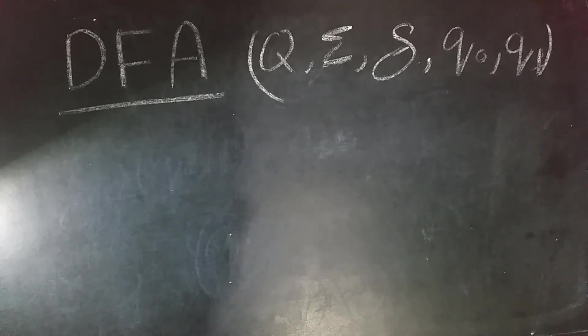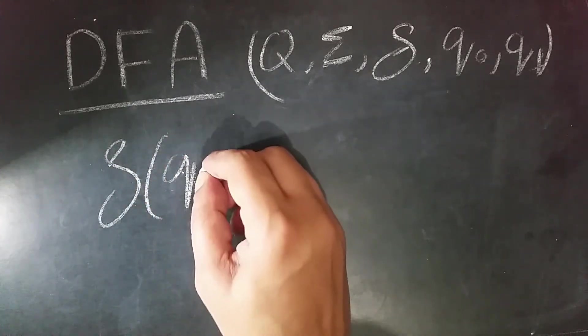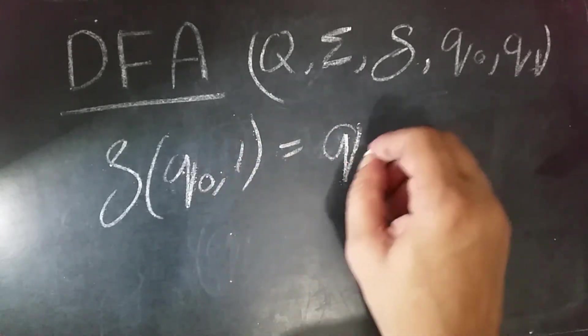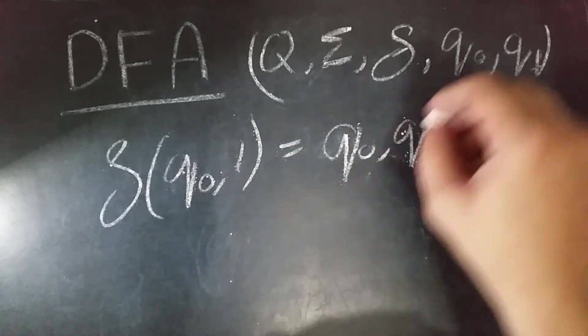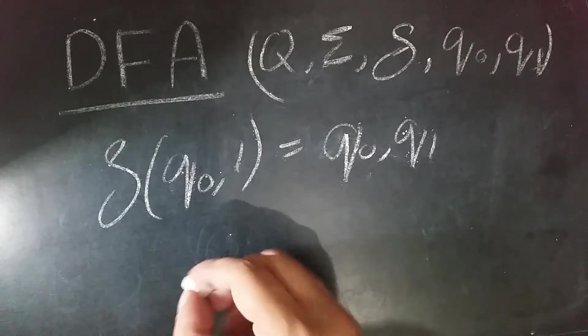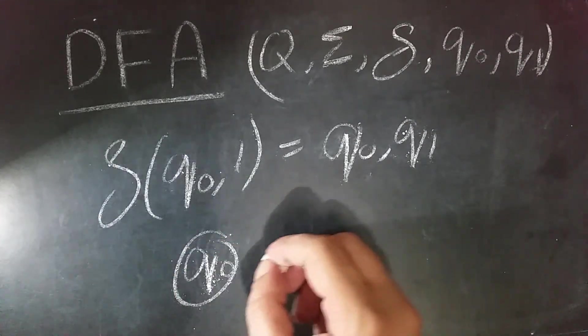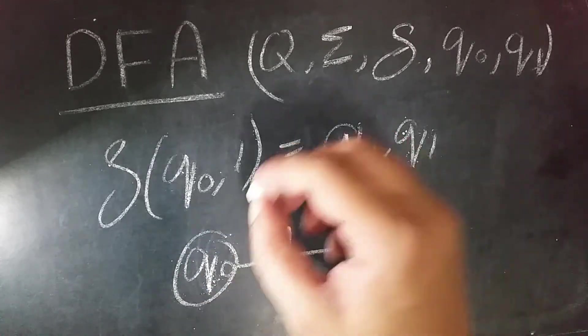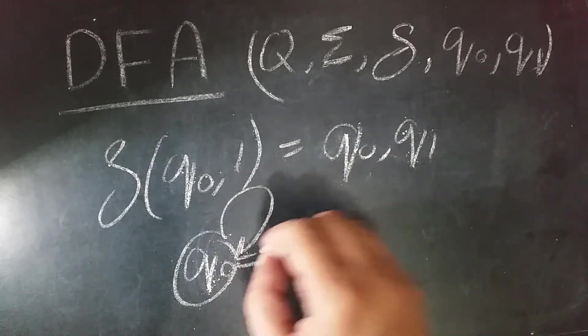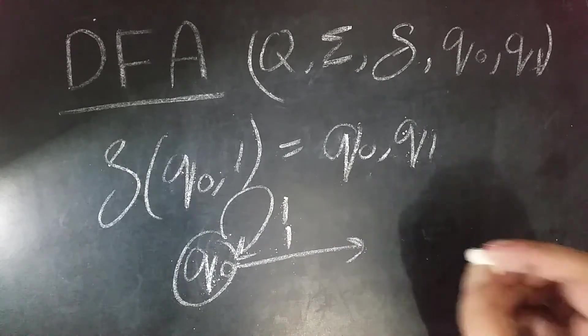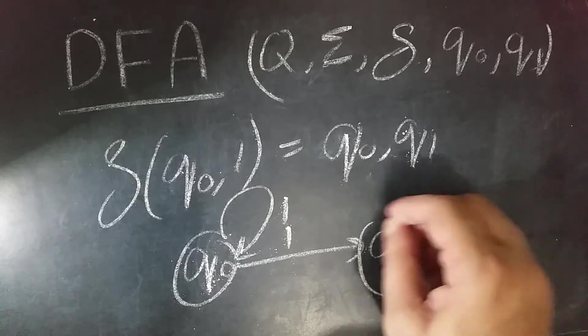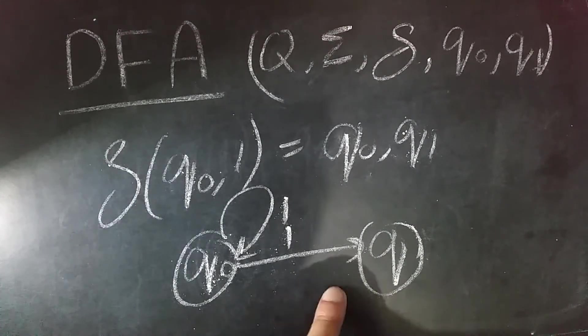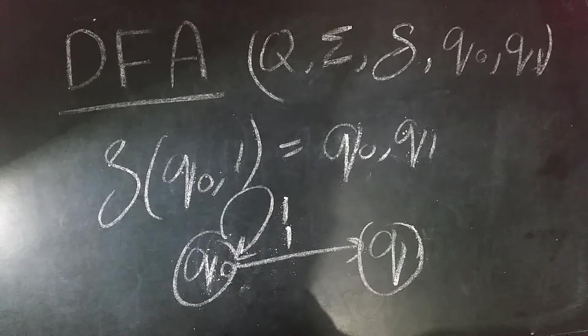Another example: for Q0, if input is 1, it takes us to Q0 and Q1. Here, when Q0 receives input 1, we have to take it to Q0 (which is a loop) and Q1. Since for one input there are two transitions, it is not a DFA.